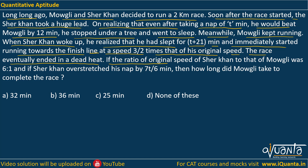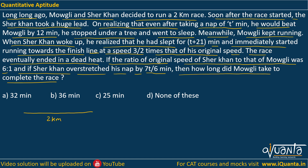If the ratio of original speed of Sher Khan to that of Mowgli was 6:1, and if Sher Khan overstretched his nap by 70/6 minutes, then how long did Mowgli take to complete the race? So, we have a 2km race, and both Mowgli and Sher Khan are starting together.